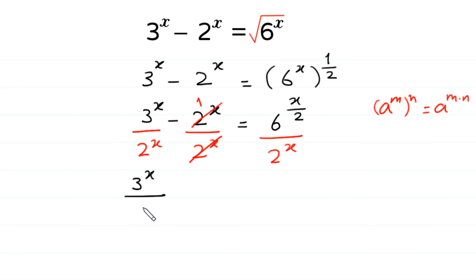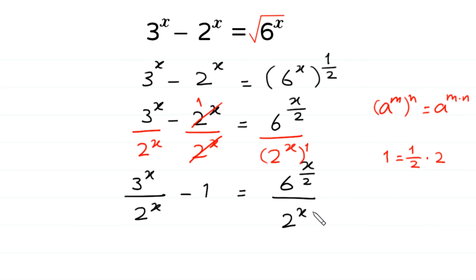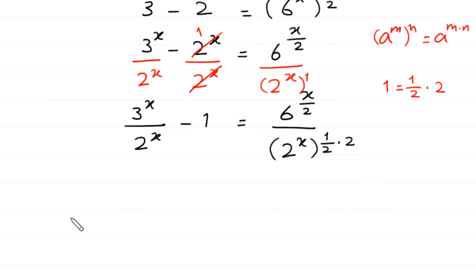3 to the power x divided by 2 to the power x, minus 1, is equal to 6 to the power x over 2 divided by 2 to the power x. Now, because here we have 6 to the power x over 2, we make the same power of this 2 as x over 2. This 2 to the power x has power 1, and 1 is equal to 1 over 2 times 2. So we replace this 1 with 1 over 2 times 2, giving 2 to the power x whole to the power 1 over 2 times 2.